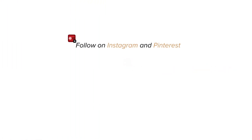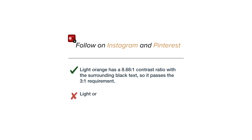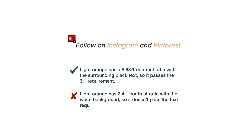These Instagram and Pinterest links are light orange with a white background. The surrounding text is black. The light orange has an 8.68 to 1 contrast ratio with the surrounding black text, so it passes the 3 to 1 requirement. However, it only has a 2.4 to 1 contrast ratio with the white background, so it doesn't pass the text requirement of a 4.5 to 1 ratio.